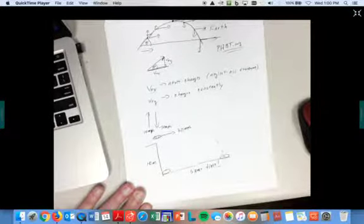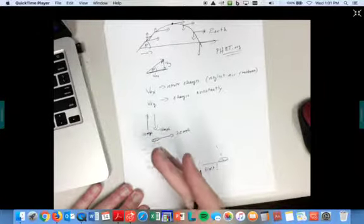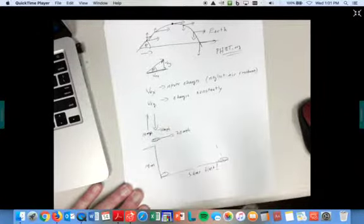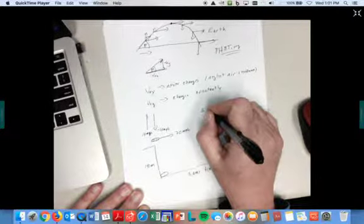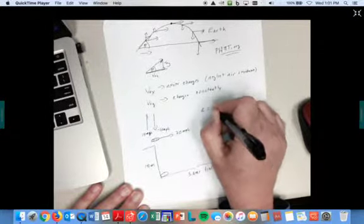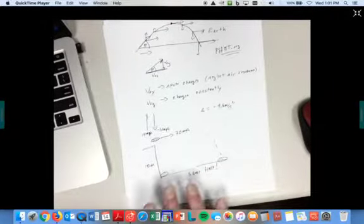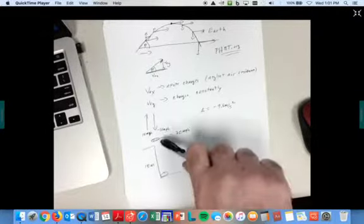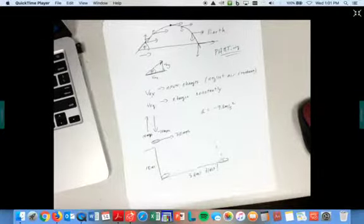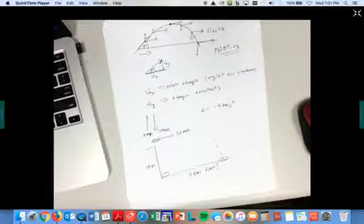But you know why? Because the only acceleration that's happening here is negative 9.8 meters per second squared. As soon as that French loaf left Patrick Mahomes' hand, gravity took over. As soon as the soccer player kicked this ball, gravity took over.